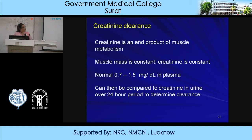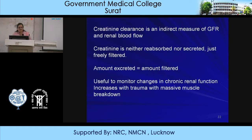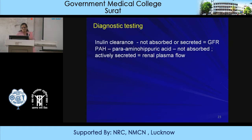There are different clearance studies. For the glomerulus, we have inulin clearance and urea clearance for measuring GFR. For the tubules, we have creatinine clearance - creatinine is an end product of muscle metabolism, normally 0.7 to 1.5 mg/dL in plasma. Creatinine in serum can be compared to creatinine in urine over 24 hours to determine clearance, which is an indirect measure of GFR. The amount excreted equals the amount filtered; it is neither reabsorbed nor secreted. Creatinine clearance is useful to monitor changes in chronic renal function.